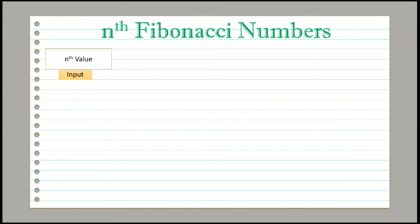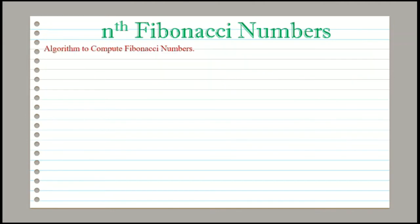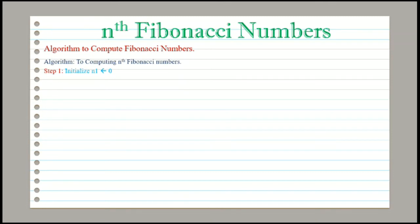Adding the previous two numbers and getting the Fibonacci series will be our processing part, and printing the Fibonacci series is the output part. Now we will see how to write the algorithm for the given problem. The title will be: algorithm to compute nth Fibonacci numbers. In step 1 we will assign the value of n1 as 0. This n1 is used to indicate the first value of Fibonacci series, which starts with 0.